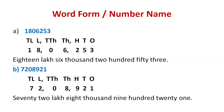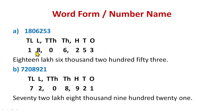Let's see some more examples. First, write the places above the number — start from the right side digit, which is three. Write above three: ones, then above five: tens, hundred, thousand, ten thousand, lakh, and ten lakhs. Insert the commas — after three digits then two digits in the Indian system. This number reads: eighteen lakh six thousand two hundred fifty three. We do not have a ten thousands digit here, so zero six is just six thousand two hundred fifty three.